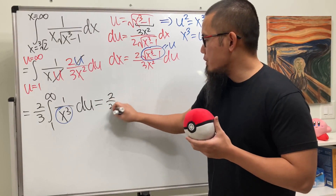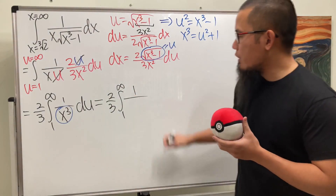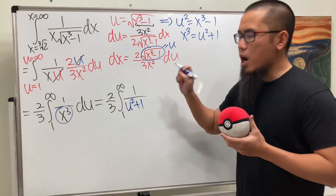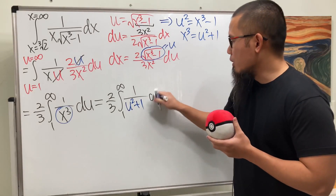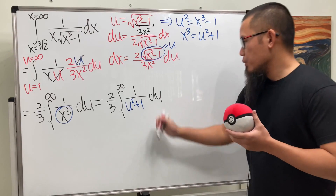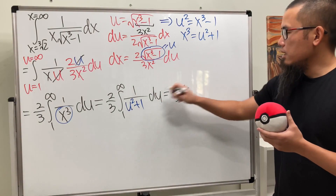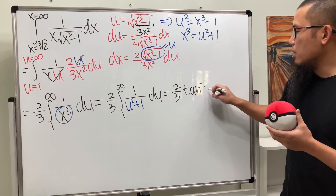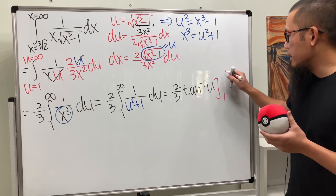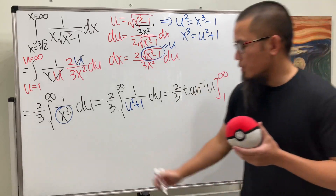So we now have 2/3 times the integral from 1 to infinity of 1/(u² + 1) du in the u-world. The integral of 1/(u² + 1) is the inverse tangent of u, so we get 2/3 times arctan(u) evaluated from 1 to infinity.